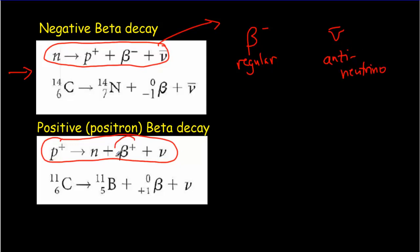Whereas this positron is an antiparticle. Beta plus is an antiparticle. And so it gets fired out with a regular neutrino, not an antineutrino. So these always end up being opposite in terms of being particle and antiparticle.